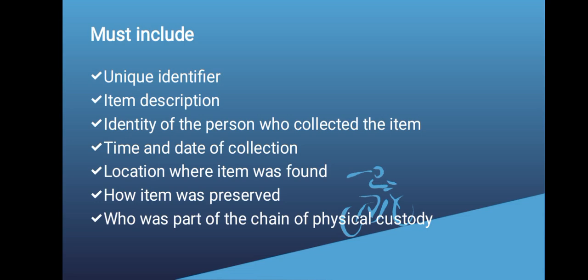So what must be included in a chain of custody? In a chain of custody there is a unique identifier, the description of the item, the identity of the person who collected the item, the time and date of collection, the location where the item was found, how the item was preserved, as well as who was part of the physical custody — that is, anyone who handled it from the first stage of collection till it's produced in court.